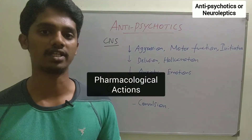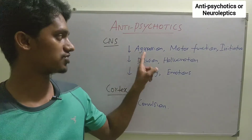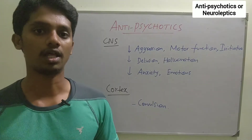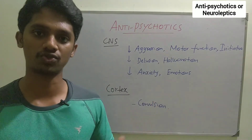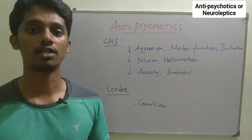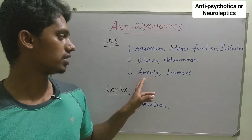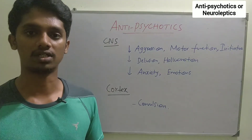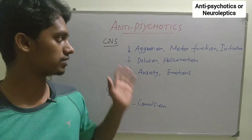In pharmacological actions, the main action is in the CNS. Aggression, motor function, and initiative are all reduced — that means the patient's aggression is very low, motor function is less, and initiative is less. Psychotic symptoms like delusions and hallucinations are also reduced. Finally, anxiety and emotional responses are reduced as well.